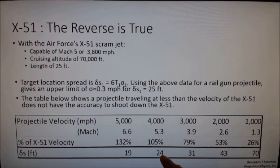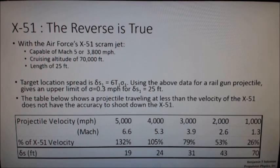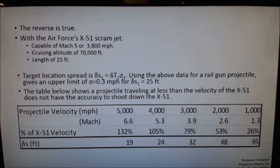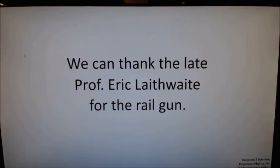So, this tells us that if we want to shoot a projectile with reasonable accuracy, with reasonable repeatability, we need to have a projectile that is travelling faster than the target velocity. And that is a very important lesson. That explains why the railgun travelling Mach 7.4 will have an enormous repeatability and accuracy in bringing down its targets. And that is the key secret of the velocity. And we can thank the late Professor Eric Leithbeth for the Navy's railgun.